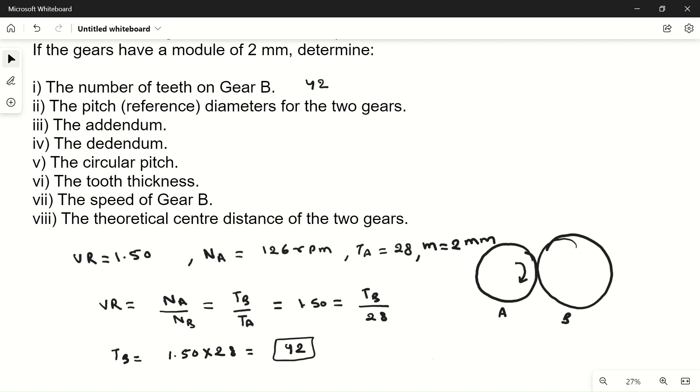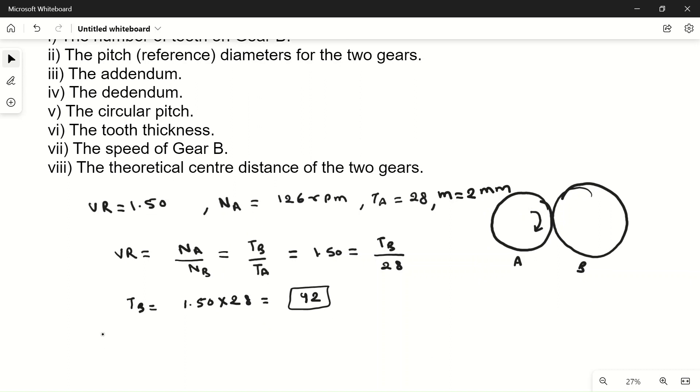The pitch diameter of the two gears. Diameter D is equal to module into number of teeth, this is the standard formula. So diameter DA is 2 mm into TA which is 28, which is equal to 56 mm. So 56 mm is the diameter of gear A.